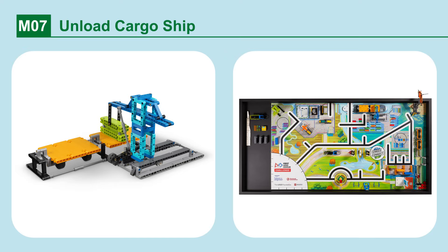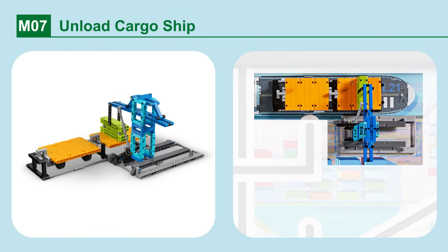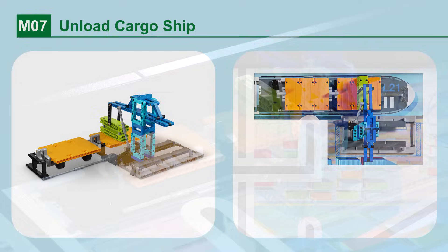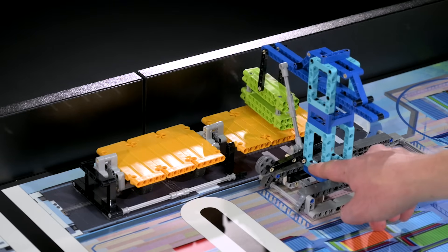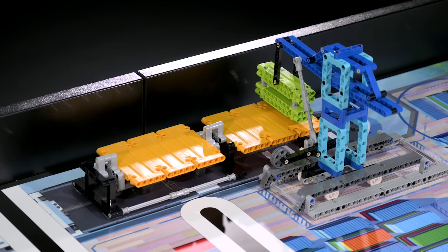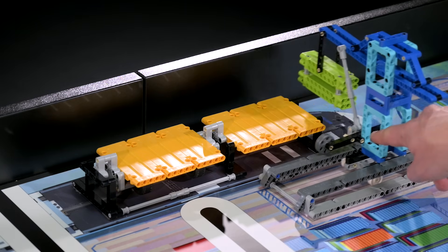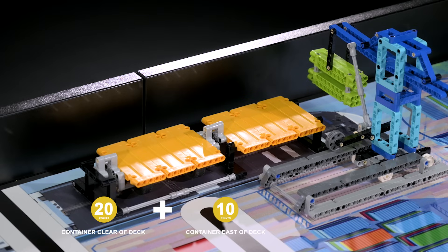Mission 7. Unload cargo ship. Unload the container from the cargo ship. If the lime green container is no longer touching the ship's deck. Move the lime green container so that it is completely east of the cargo ship's east deck.